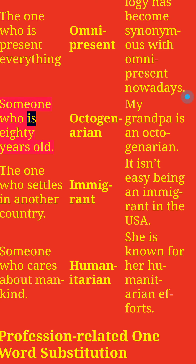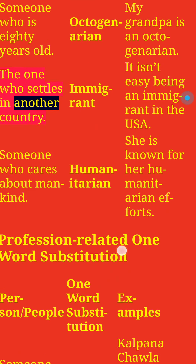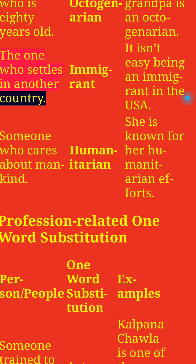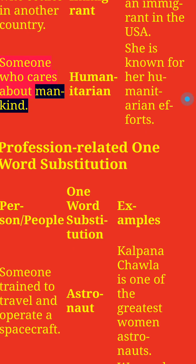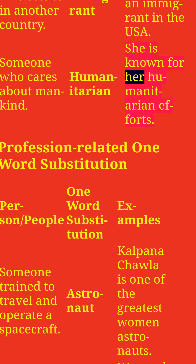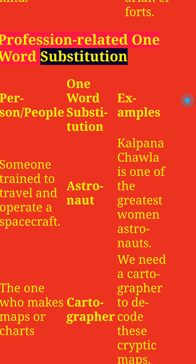Someone who is 80 years old: Octogenarian. My grandpa is an octogenarian. The one who settles in another country: Immigrant. It isn't easy being an immigrant in the USA. Someone who cares about mankind: Humanitarian. She is known for her humanitarian efforts.